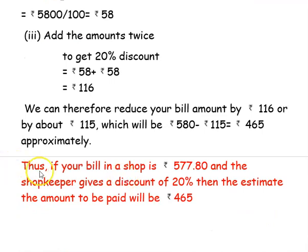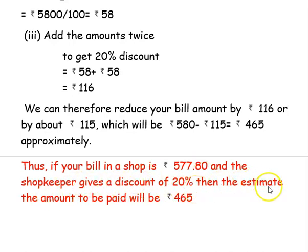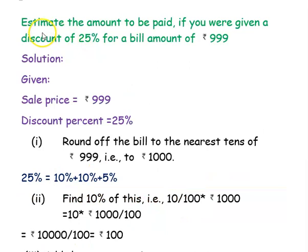Thus, if your bill in a shop is rupees 577.80 and the shopkeeper gives a discount of 20 percent, then the estimated amount to be paid is rupees 465.